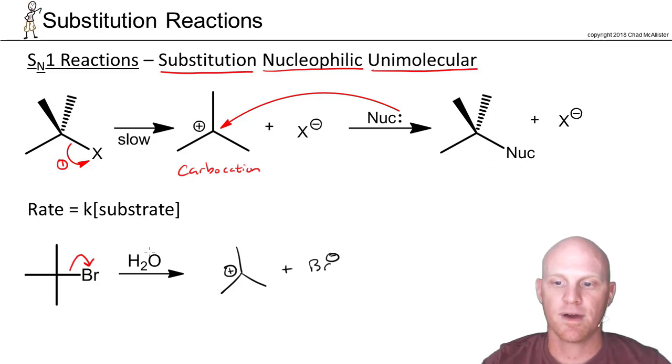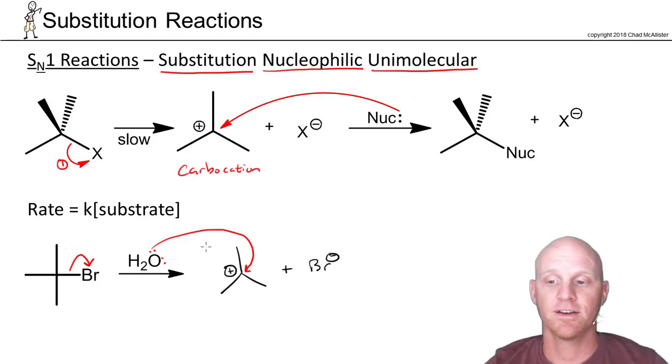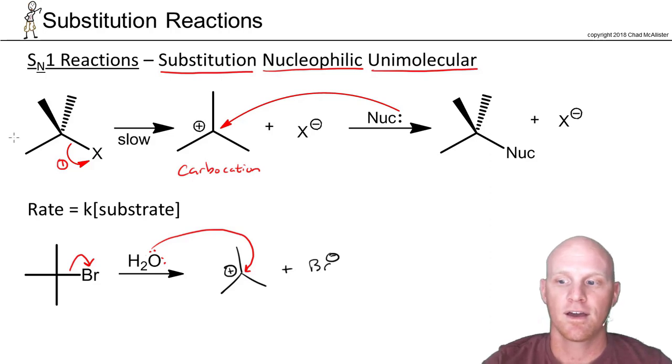Now water is going to come and attack the carbon with a positive charge. The arrow we're drawing here goes to the carbon, not to the positive sign. Sometimes you can't get around it, but you should be drawing the arrow specifically to the carbon. When we do so, we're going to get this intermediate. The nucleophile is now attached.